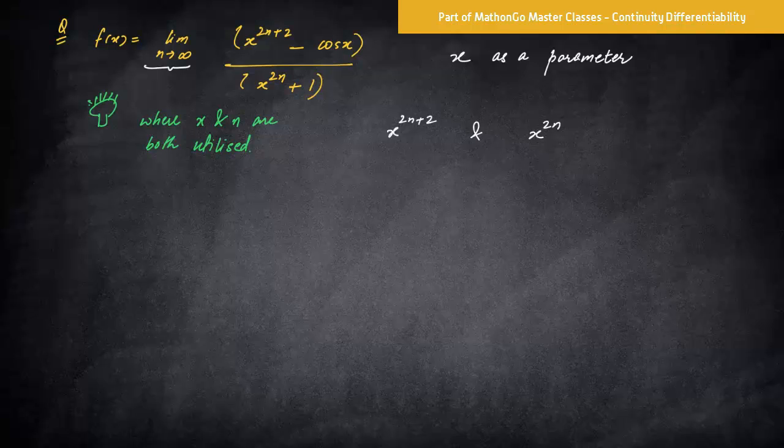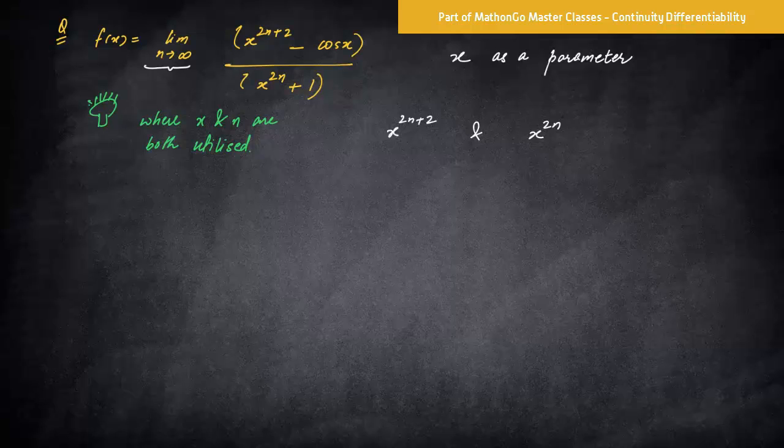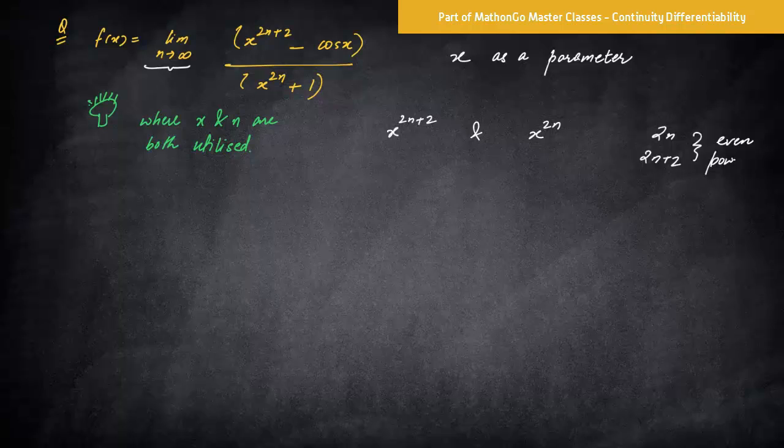Now what is a good part about this is we should start thinking of what we all know about in maths. 2n and 2n plus 2, right? This means both are even powers. This is for sure. That means a number will always be positive.